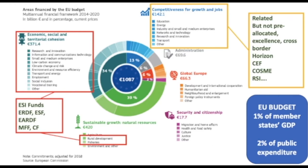If you look at the ESI Funds, we have some research and innovation in the structural funds, but it is focused on capacity building. At EU level we have the Horizon 2020 programme, based on excellence and financing projects — not the capital cost of buildings or human capital development, which however could be covered by ESI Funds in eligible regions. ESI Funds can support, with research and innovation investments, the building of capacity to participate at the European level in Horizon 2020 projects.